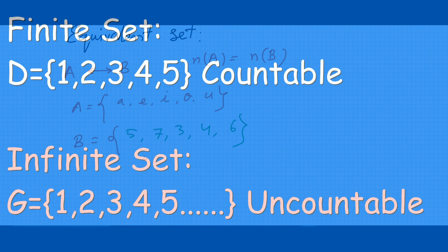One thing I want to clarify: when explaining the cardinal number of a set I used the term finite set. Why? Because finite sets are countable. To find the cardinal number we have to count the members, and if the set is an infinite set it is impossible to count its members. That is why we use the word finite set.